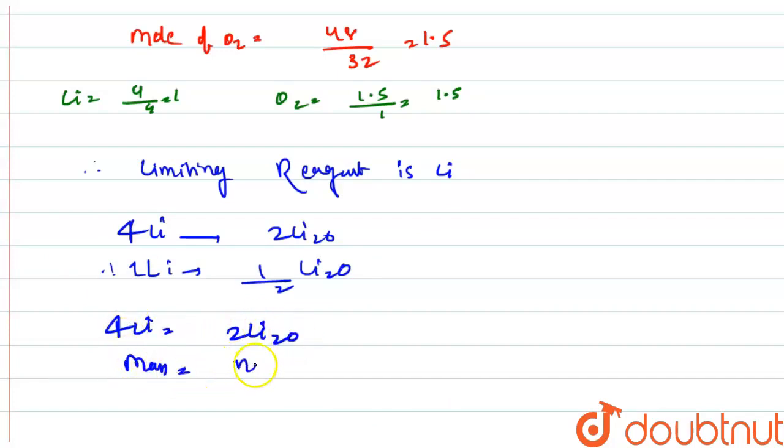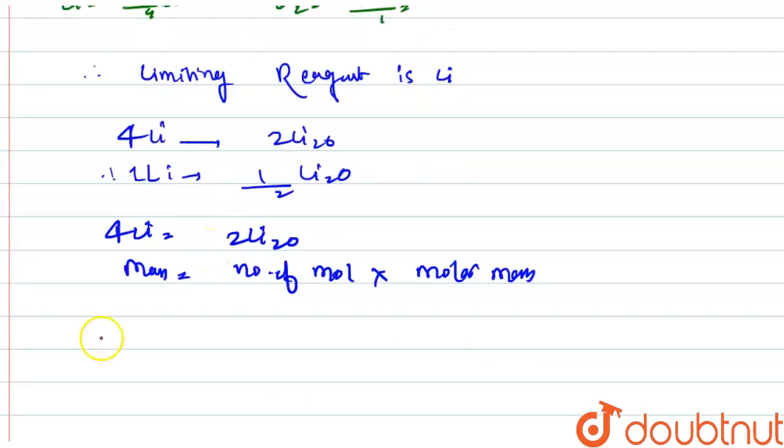Mass equals number of moles multiplied by molar mass. The molar mass of Li₂O is 30. Therefore, mass of Li₂O equals 2 times 30, which equals 60 grams. So 60 grams is the answer.